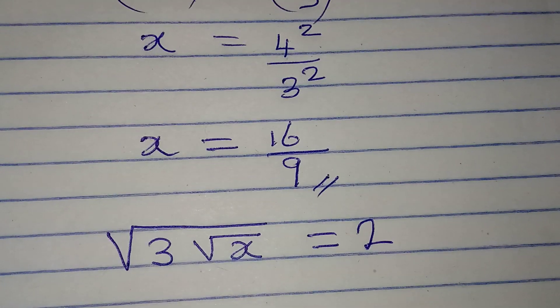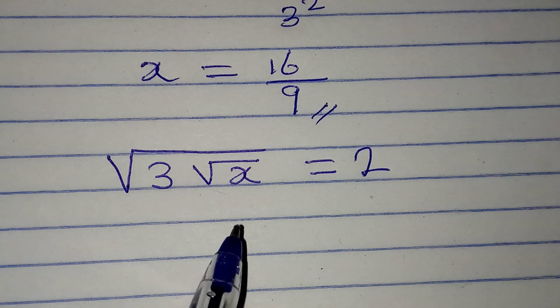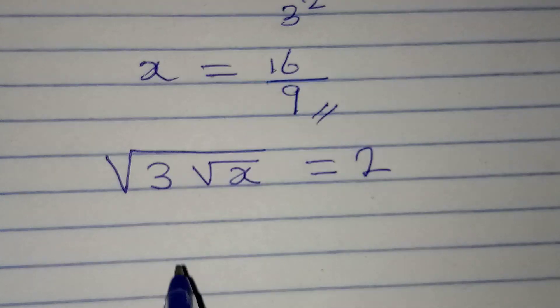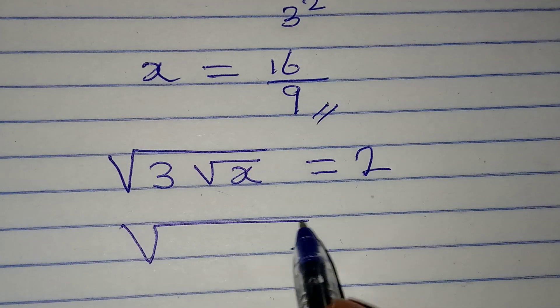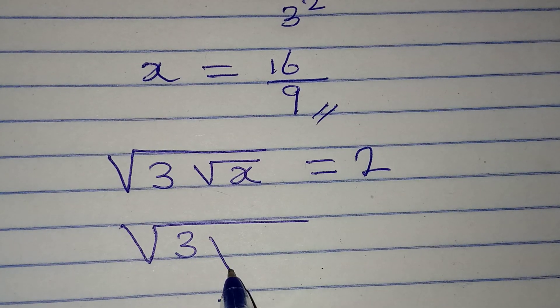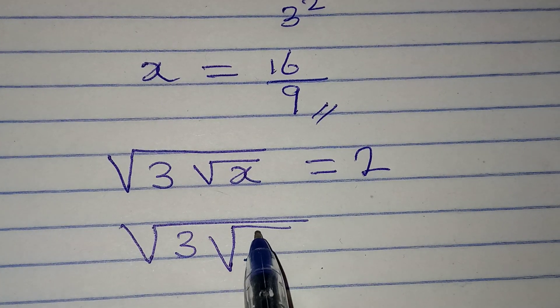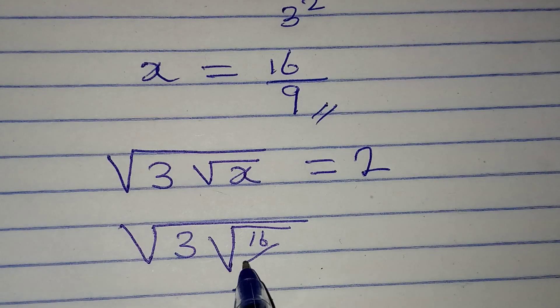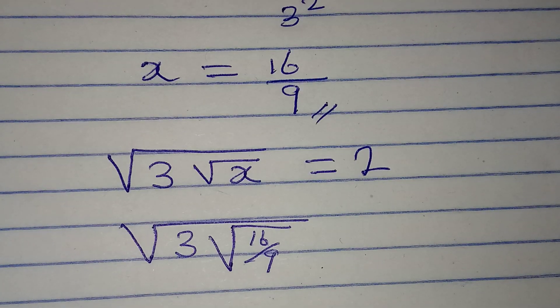Now, if we put in the value of x, are we going to have 2? Now, let's try. This is 3. Now, square root of x will now be square root of 16 over 9.